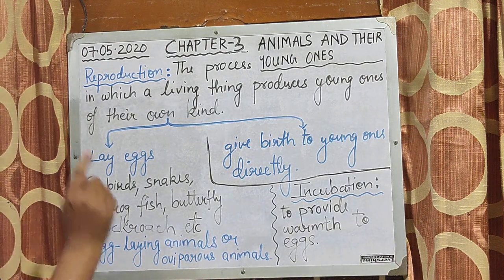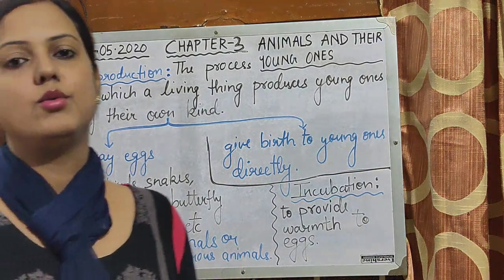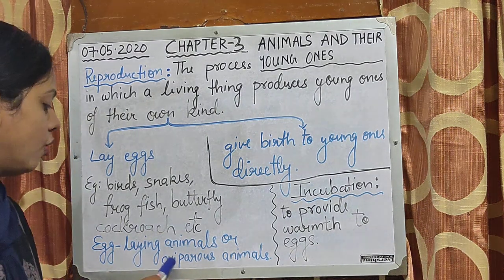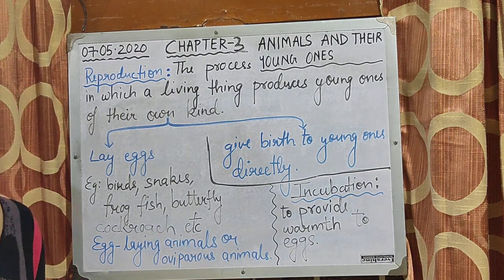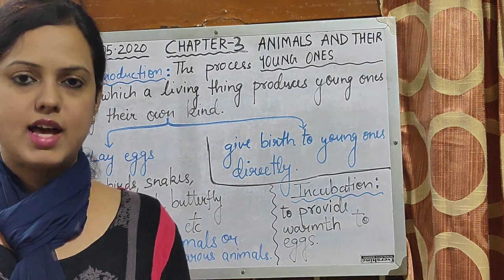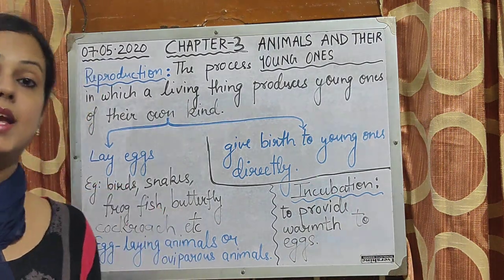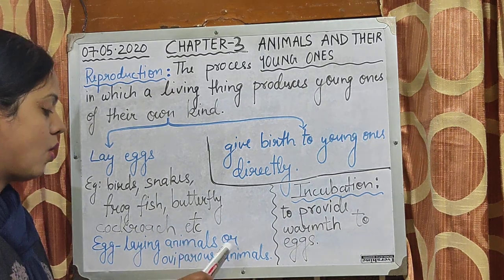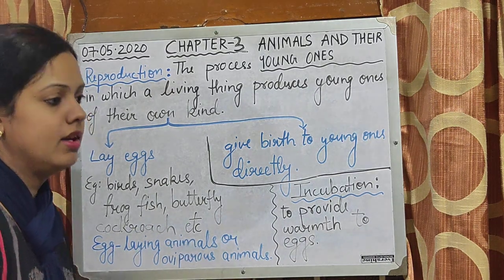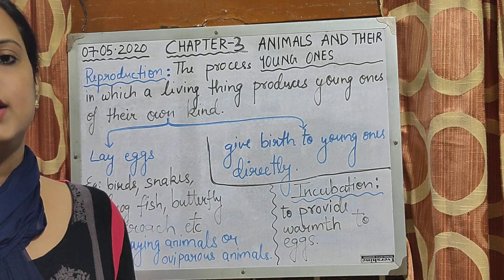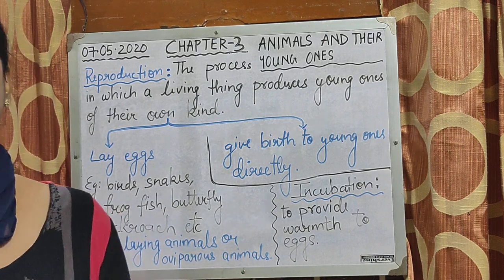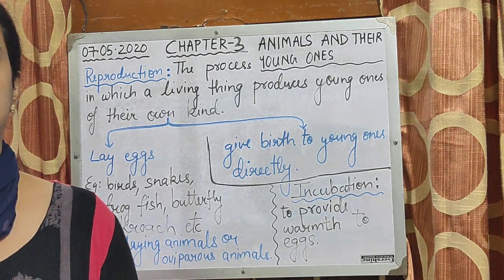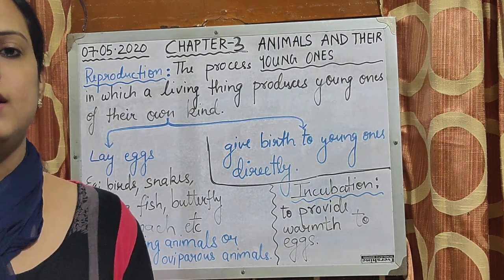Those animals which reproduce by laying eggs are called egg-laying animals or oviparous animals. So from now, if you read somewhere that this animal is an oviparous animal, you should immediately know that this animal reproduces by laying eggs.